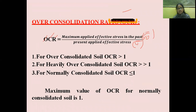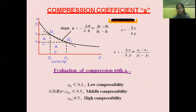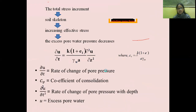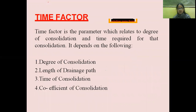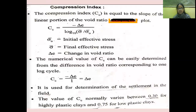The types of consolidation include primary consolidation, secondary consolidation, and normal consolidation. Today's topic covers some important definitions, beginning with the compression index.